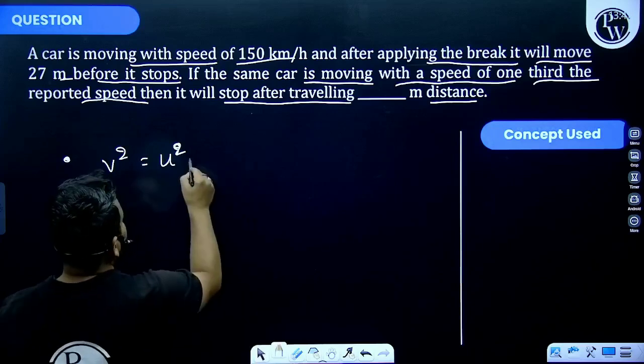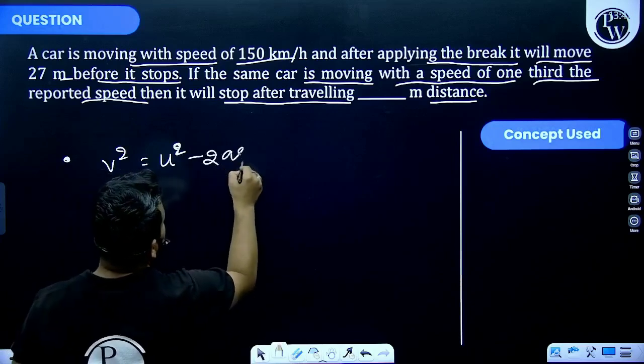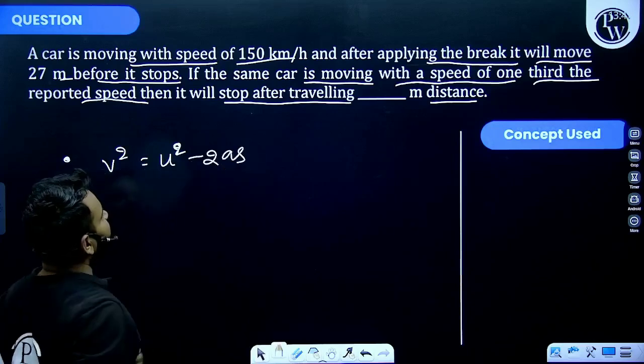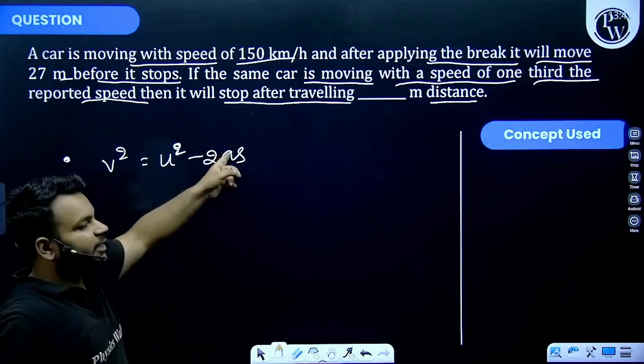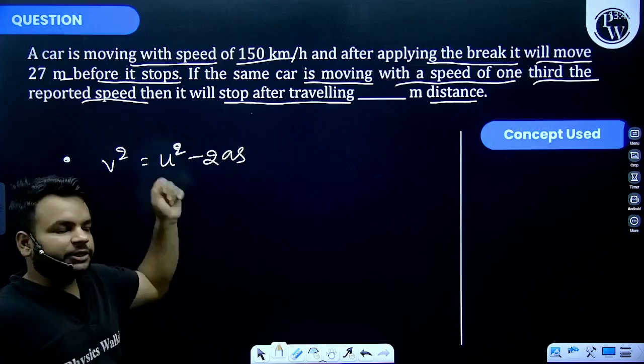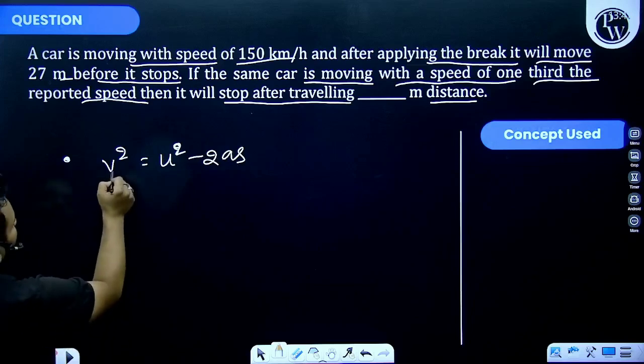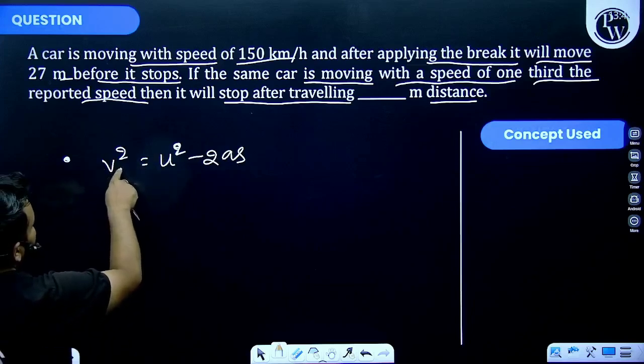So we can write v² = u² - 2as. This minus sign represents that acceleration is negative, that means retardation. Okay, so we know the car finally stopped, that means velocity is equal to zero.